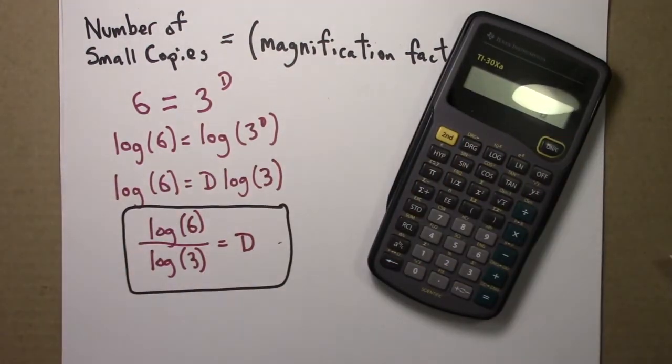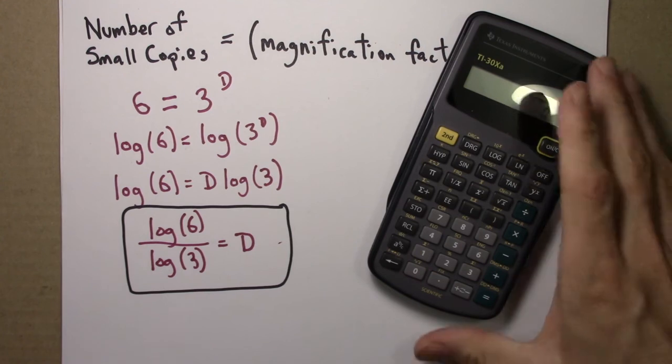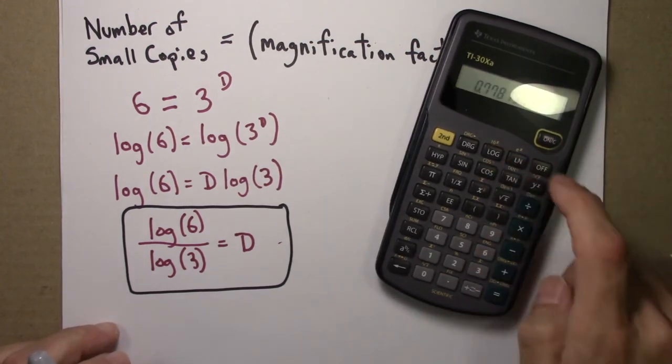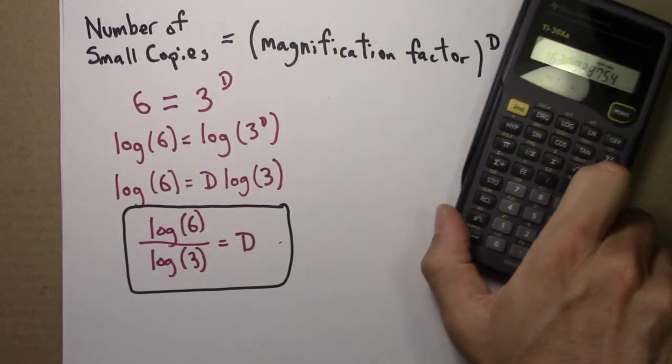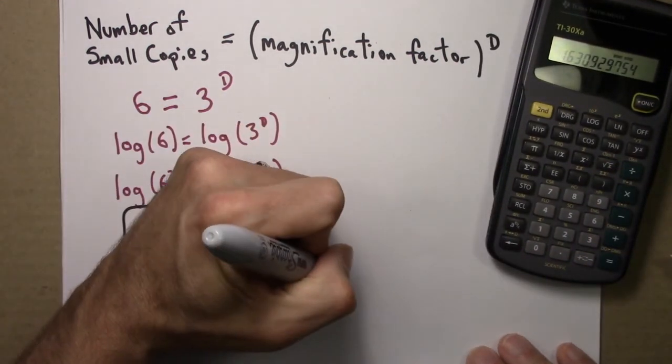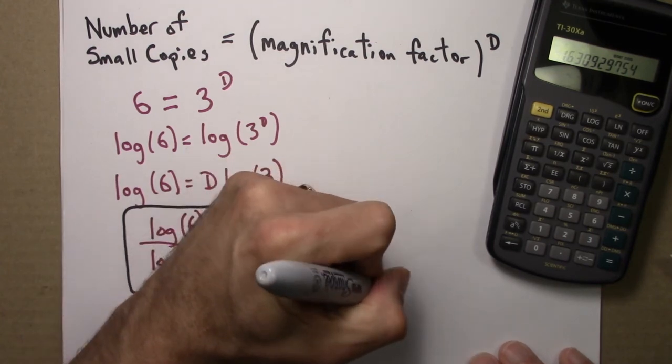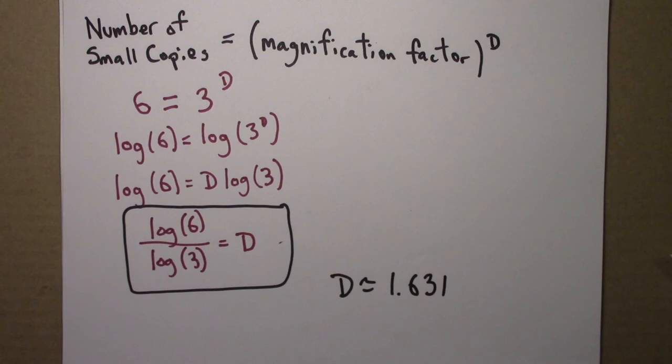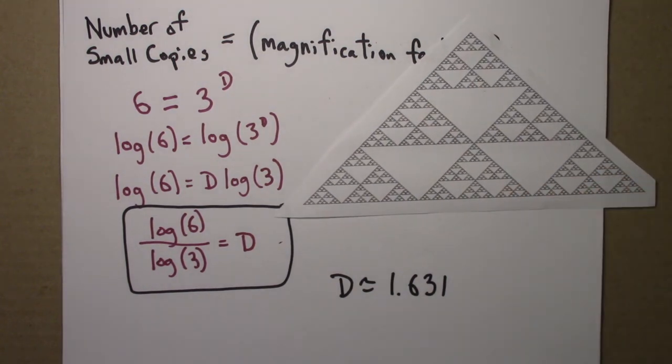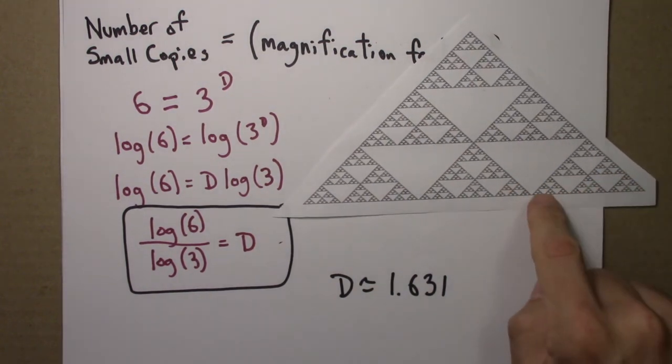And let's see. Let's get a number out of this too, an approximate number. Six log divided by three log equals about 1.631. So D is approximately 1.631. So that's the self-similarity dimension of this fractal.